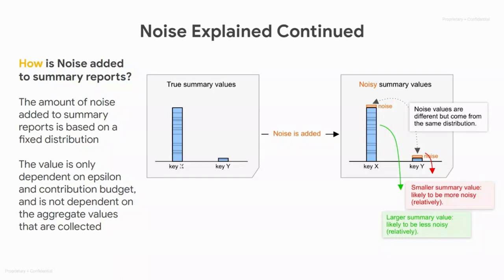We will see an example of this in the noise lab demo. In this example, we have two buckets with very different true values. In the second image, once noise is added, we see that a similar amount of noise is added to both, but the noise has a much larger relative impact on the smaller blue bar versus having a much smaller relative impact on the larger blue bar.